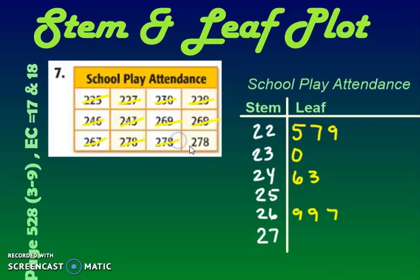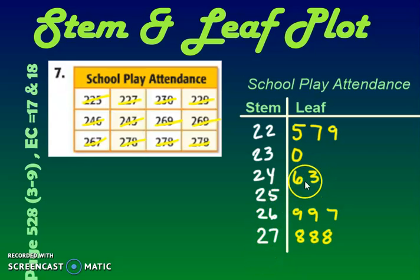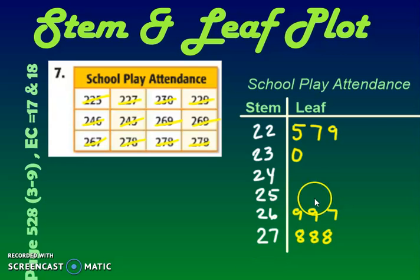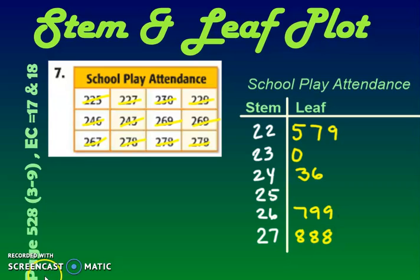And then 278. I just need to fix those two — I'll switch the three and the six around. So for 26: 6, 9, 9; for 27: 7, 8, 9, 9. That's our stem and leaf plot for this one, all in order. Now I've got some questions for you.